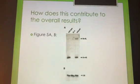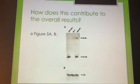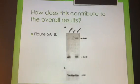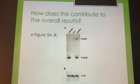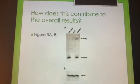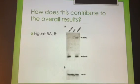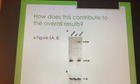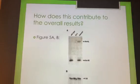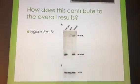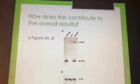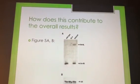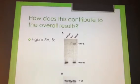So how does this contribute to the overall results? Later on in the article, these two products, the LIN-4L and the LIN-4S, were found to be partially complementary to a sequence repeat in the three prime untranslated region of LIN-14 mRNA. So the untranslated region, the UTR of LIN-14, was complementary to parts of LIN-4L and LIN-4S.